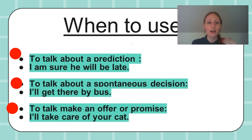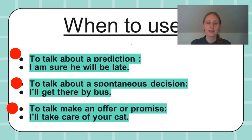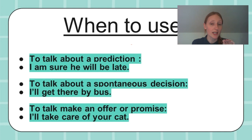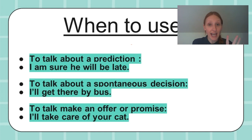We also use will to make an offer or a promise: 'I'll take care of your cat tomorrow' or 'I will take care of your cat when you are gone.' So it's to make promises to people and to tell them what you will do for them in the future. It can be for others or for yourself — what you are capable of doing. 'I will take care of your cats. I can take care of your cats.' It's a bit different, but it can be used.